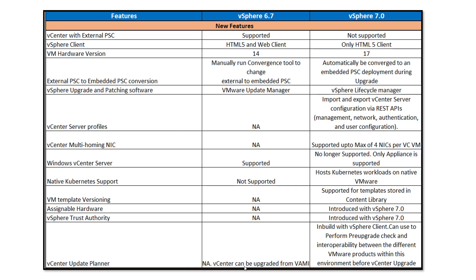Next is VM template versioning, which is not in 6.7 but is supported in 7.0. Templates must be stored in the Content Library to use this feature. Previously there was no way to track changes made to each template — you would just overwrite the same template with patches. Now you can maintain each patched version as a separate version, for example a May patch version and a June patch version.